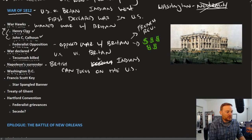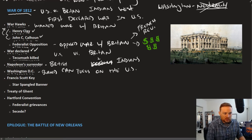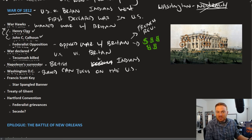This includes the burning down of Washington, D.C. This image here is showing the aftermath of the War of 1812 — the White House was burned. You can see the burn marks on this picture. Obviously, having to evacuate the capital and having Washington, D.C. burned to the ground is not an indication that the United States was winning the war.